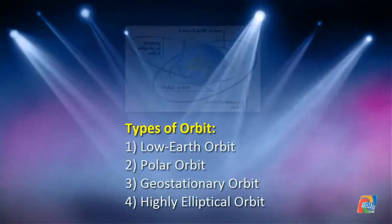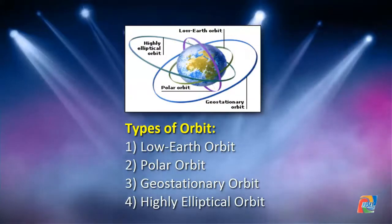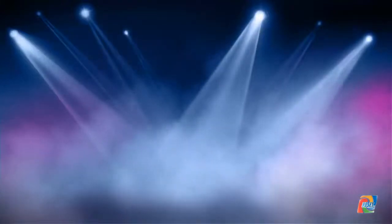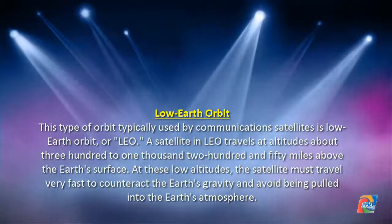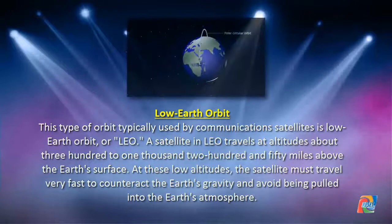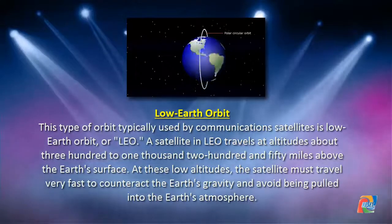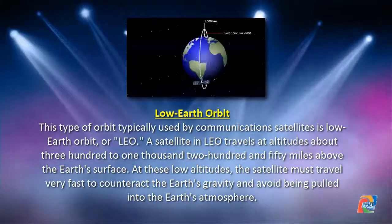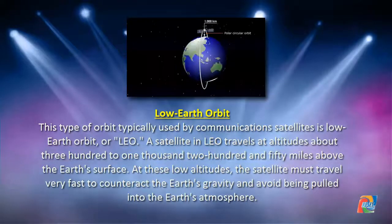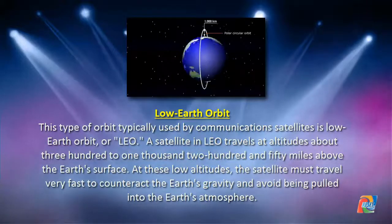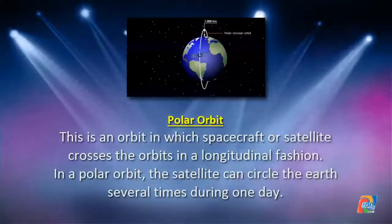There are four types of orbit: low earth orbit, polar orbit, geostationary orbit, and highly elliptical orbit. Low earth orbit, or LEO, is typically used by communication satellites. A satellite in LEO travels at altitudes of about 300 to 1250 miles above the earth's surface. At these low altitudes, the satellite must travel very fast to counteract the earth's gravity and avoid being pulled into the earth's atmosphere.